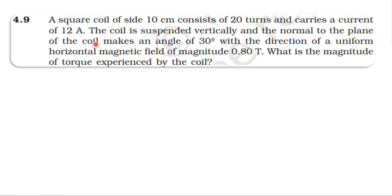From inside the test book, from the topic Moving Charges and Magnetism. A square coil of side 10 centimetres consists of 20 turns and carries a current of 12 ampere. The coil is suspended vertically and the normal to the plane of the coil makes an angle of 30 degrees with the direction of a uniform horizontal magnetic field of 0.8 tesla. What is the magnitude of torque experienced by the coil?